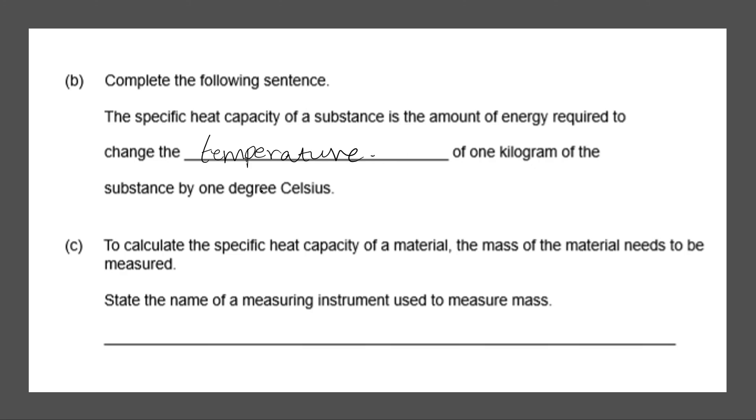Next part C. To calculate the specific heat capacity of a material, the mass of the material needs to be measured. State the name of the measuring instrument to use to measure mass. So whenever we're measuring mass we would use a balance. And that is it for this video. Thanks for watching, I hope you liked it.